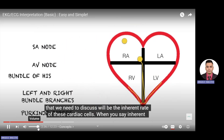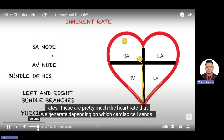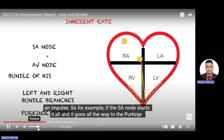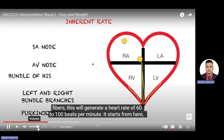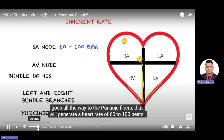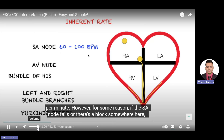Another concept we need to discuss is the inherent rate of these cardiac cells. Inherent rates are the heart rates generated depending on which cardiac cells send an impulse. For example, if the SA node starts the conduction and it goes all the way to the Purkinje fibers, this will generate a heart rate of 60 to 100 beats per minute.